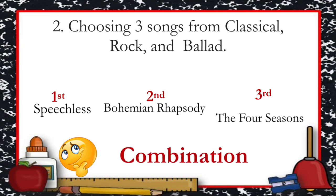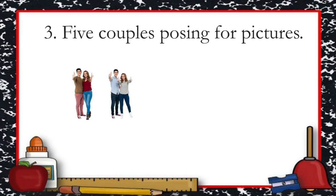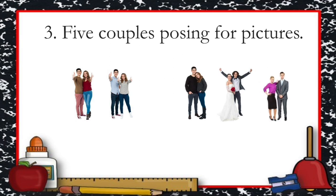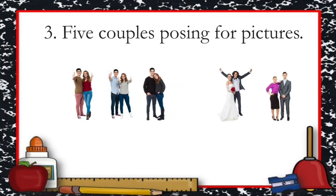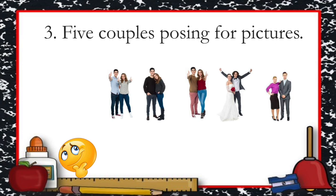How about the situation of five couples posing for pictures? We have the first couple, second couple, third couple, fourth couple, and fifth couple. If we interchange their positions, it is different from the first arrangement, so it illustrates permutation.